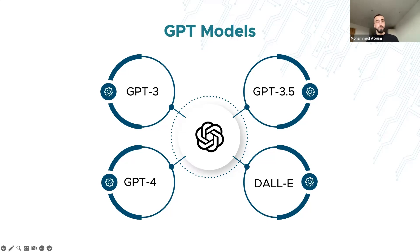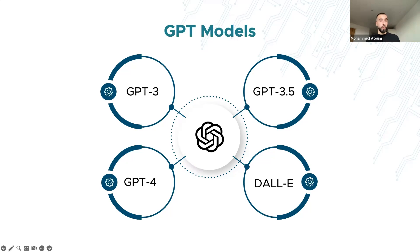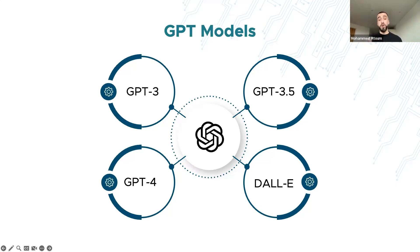DALL-E is a generative AI model that can generate images and art from just a text prompt. First released in January 2021 and significantly upgraded in DALL-E 2, you only need to write a few words describing what you want and it generates beautiful artwork — attracting many non-artists. All of these models are called Large Language Models (LLMs), a type of AI trained on massive datasets of text and code that learn statistical relationships between words and phrases.